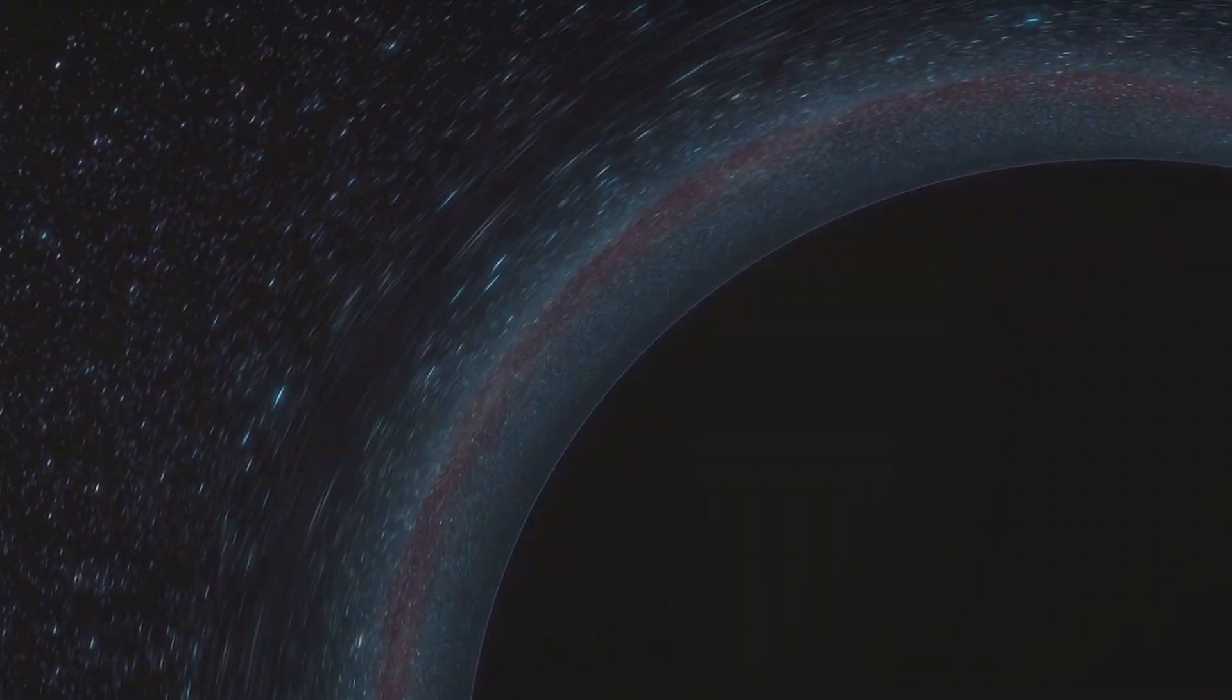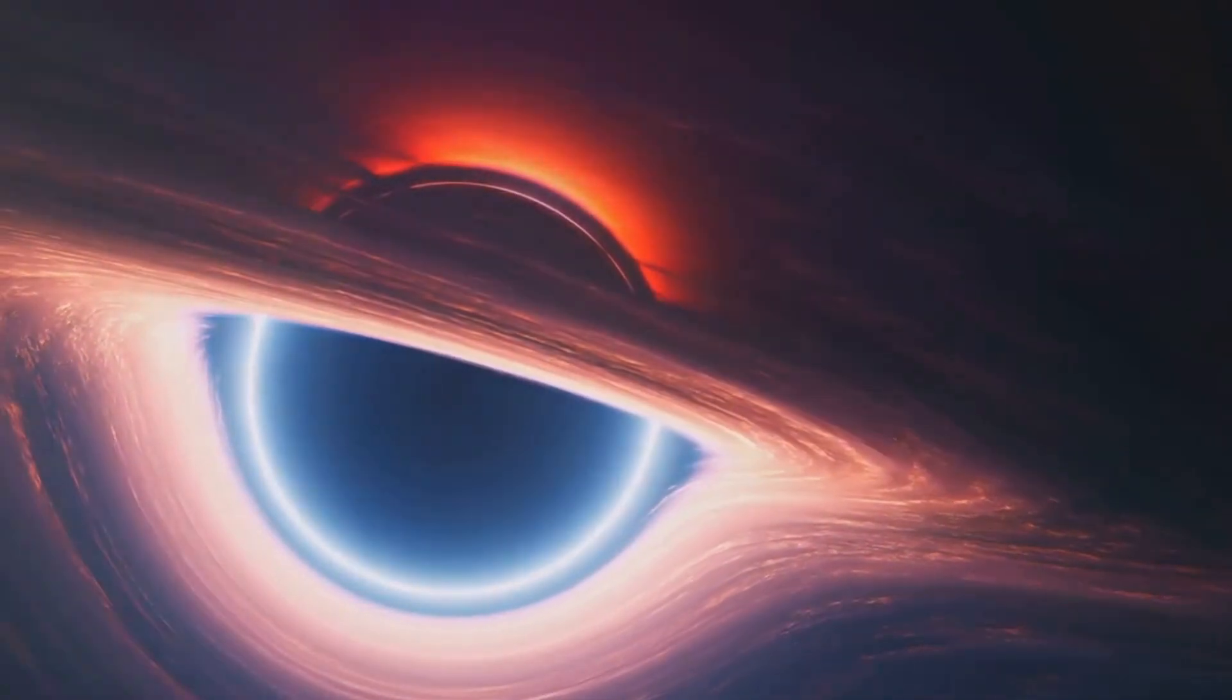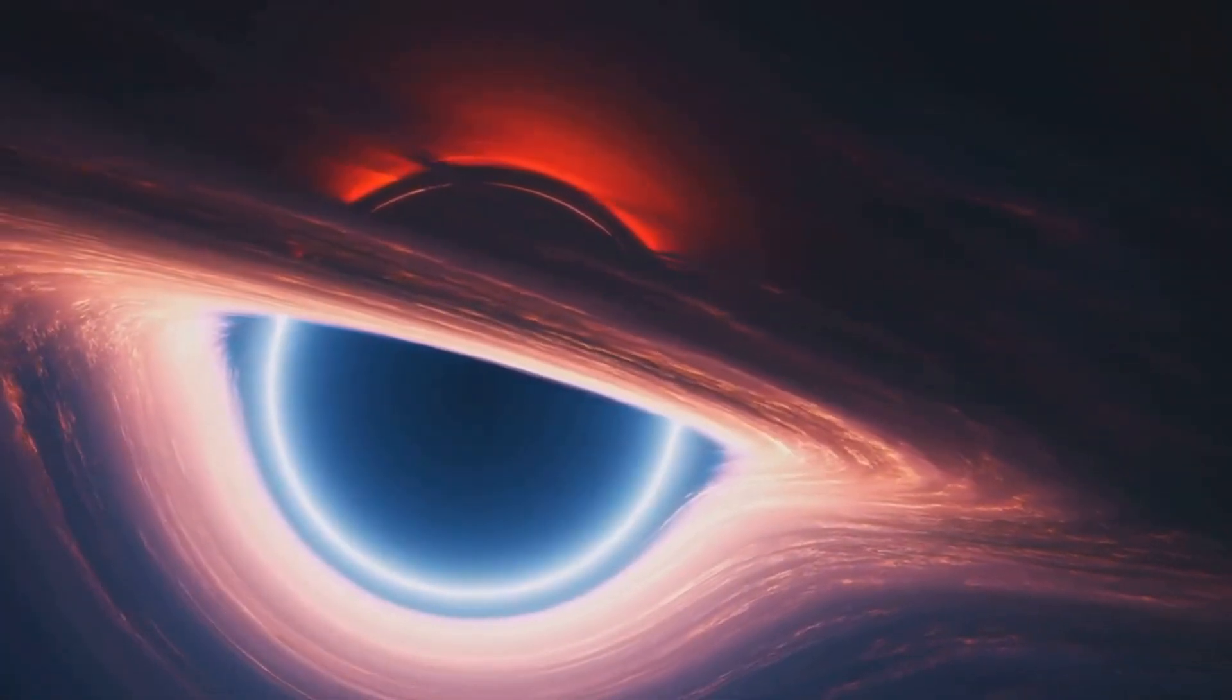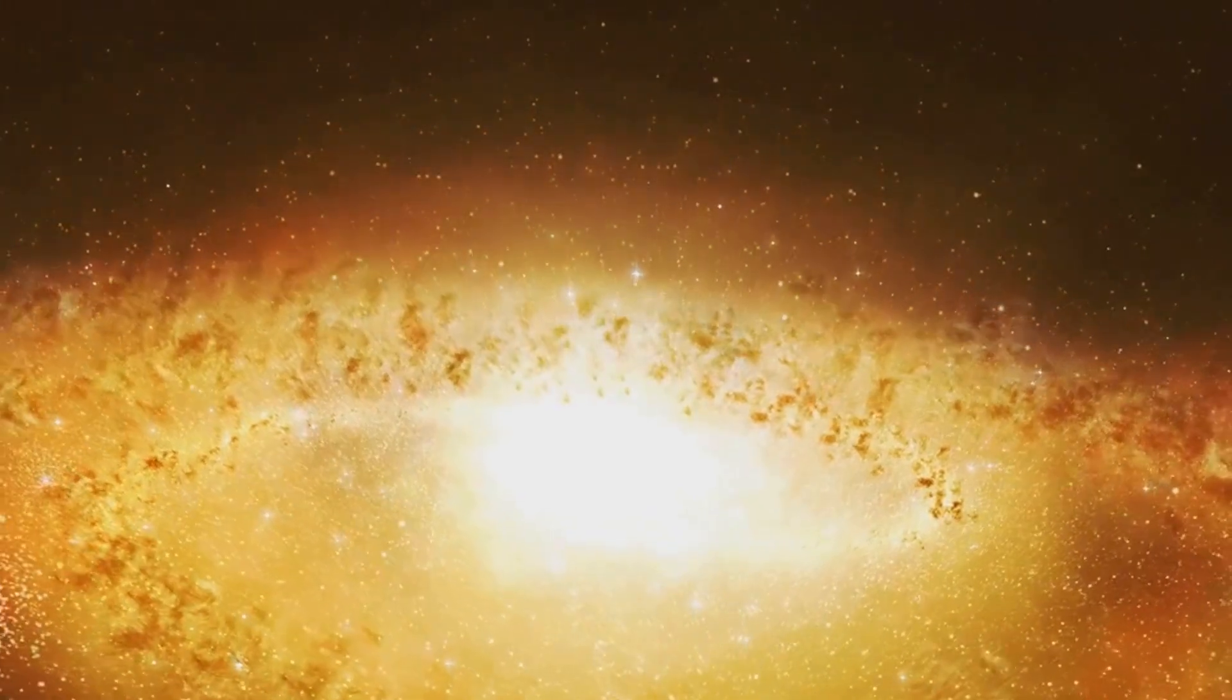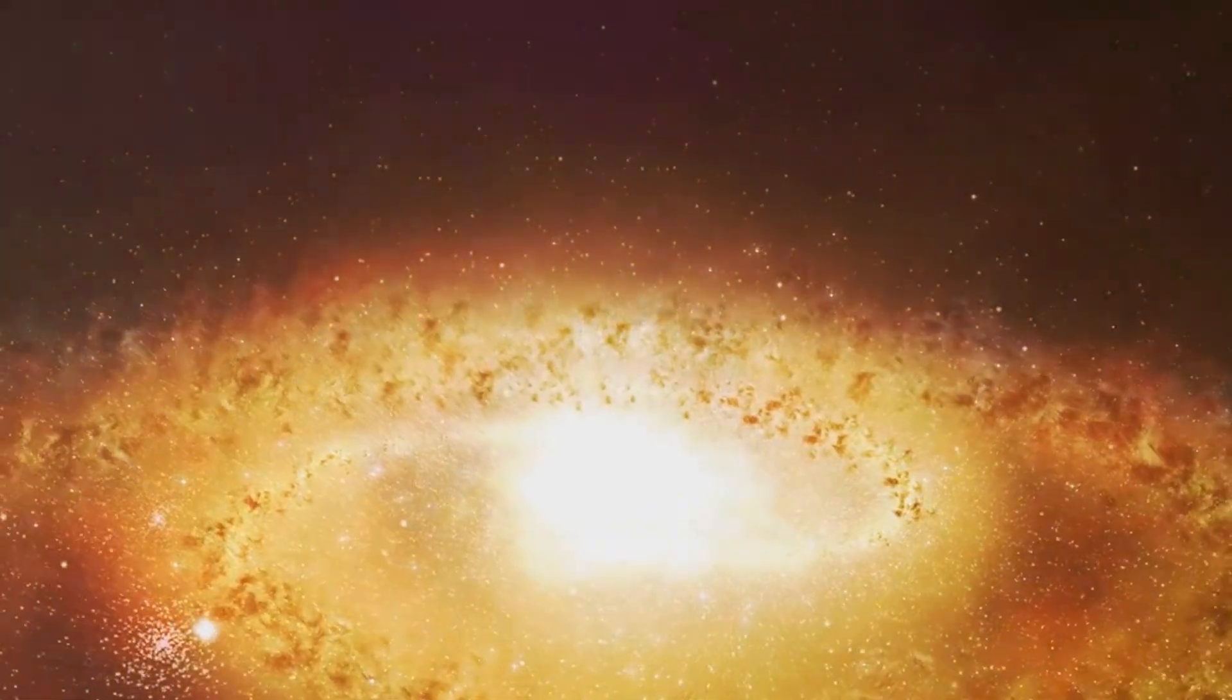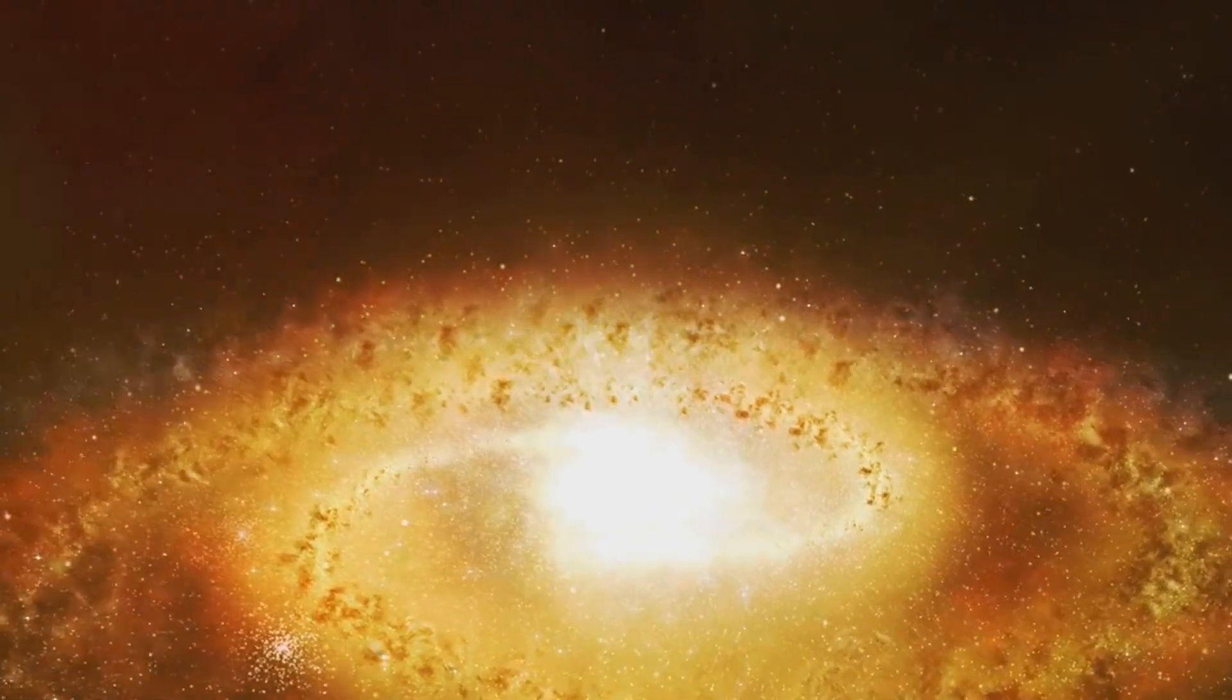A black hole is a place in space where gravity pulls so much that even light can't get out. The gravity is so strong because matter has been squeezed into a tiny space. This can happen when a star is dying, and while black holes are invisible, they can be detected through their interaction with other matter and with light.